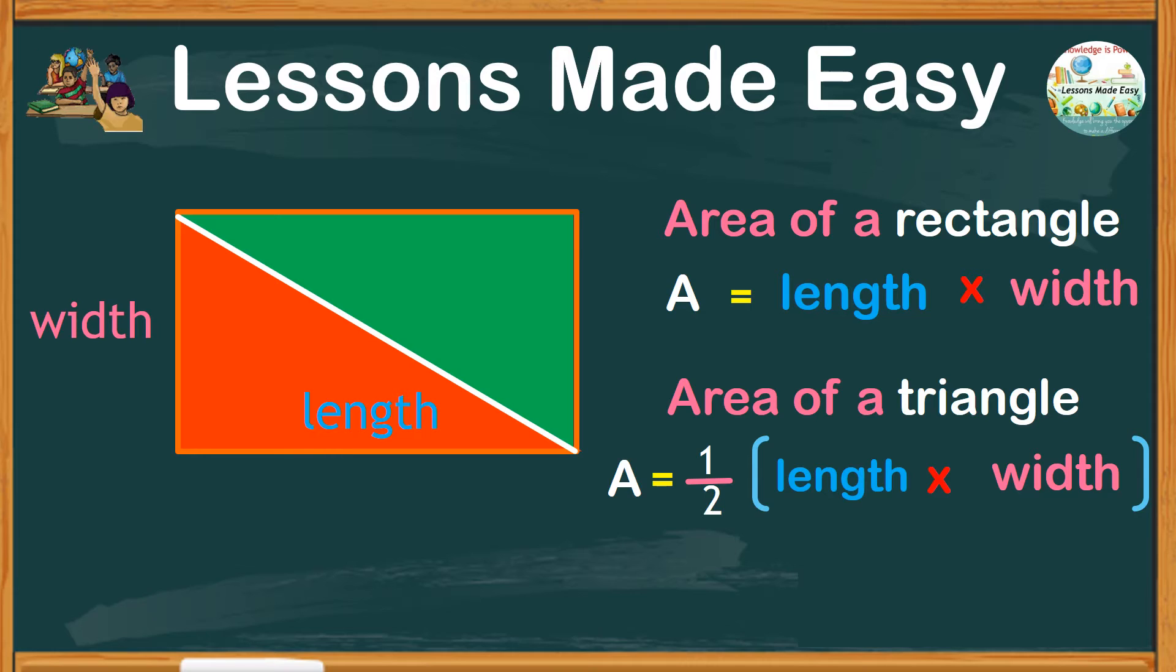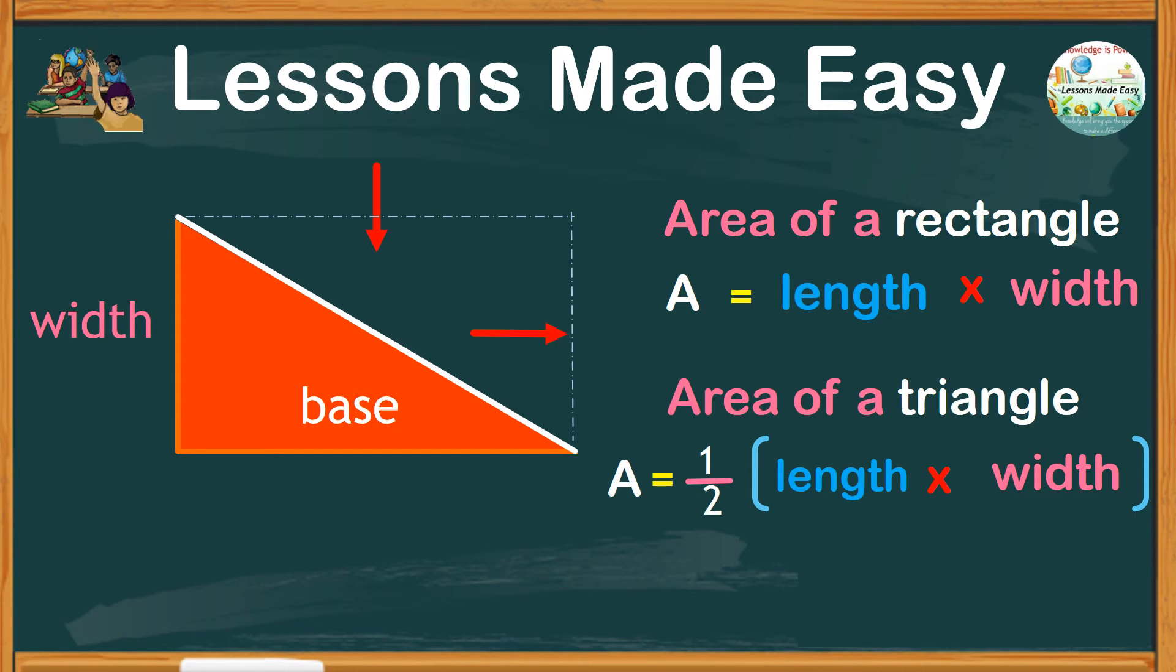But the question is, can we still make use of the length and the width in a triangle? Let's examine this triangle closely. On the opposite side the length is missing, and on the other side the width is missing, right? Therefore, since this is a triangle, the length becomes the base and the width becomes the height.